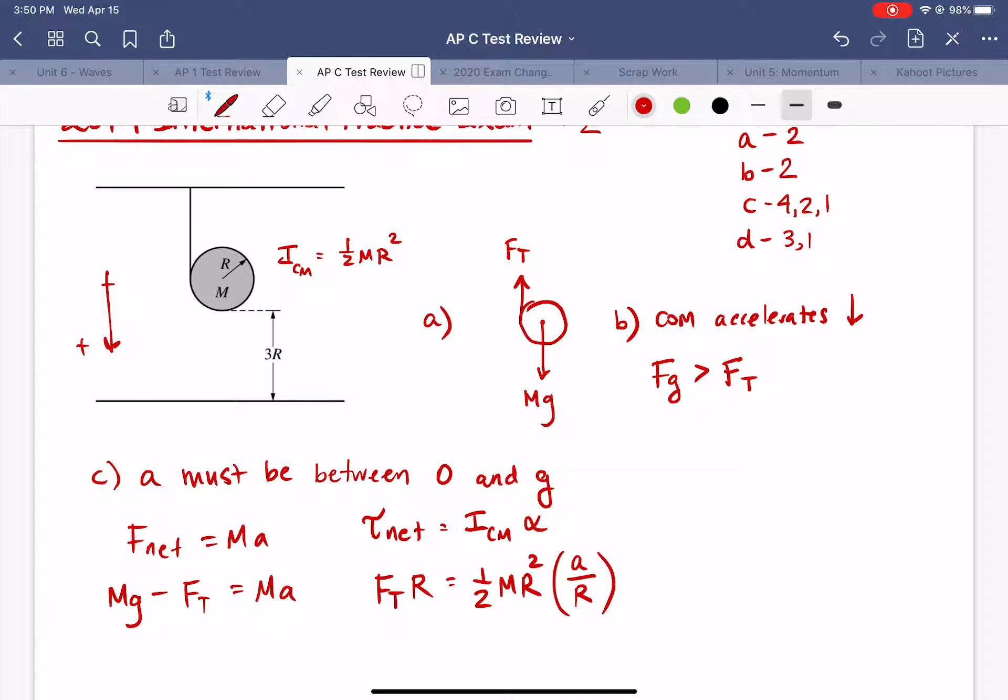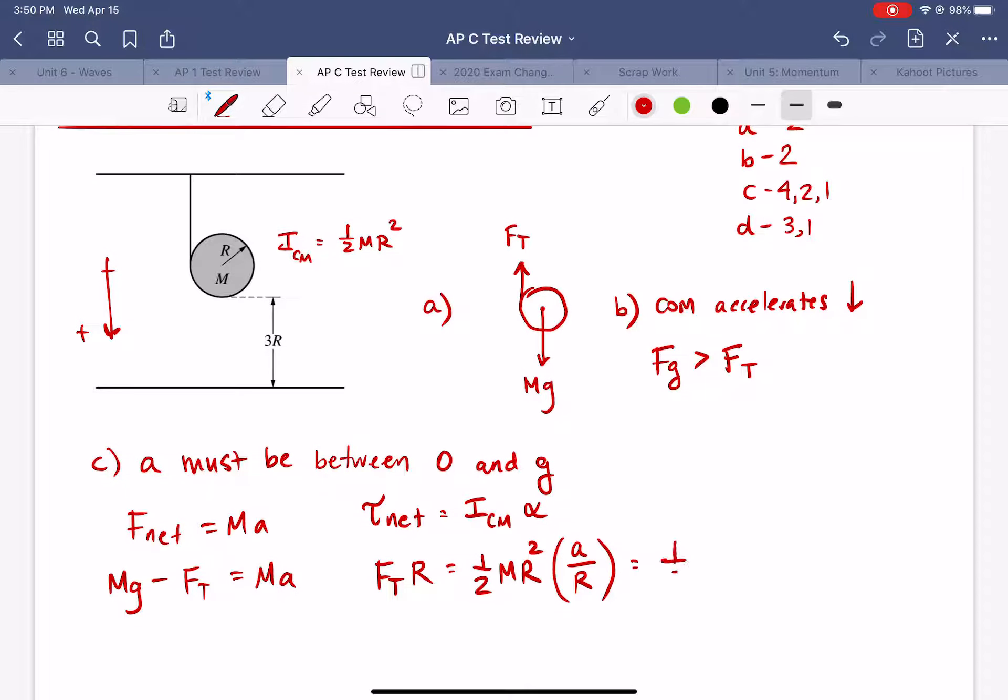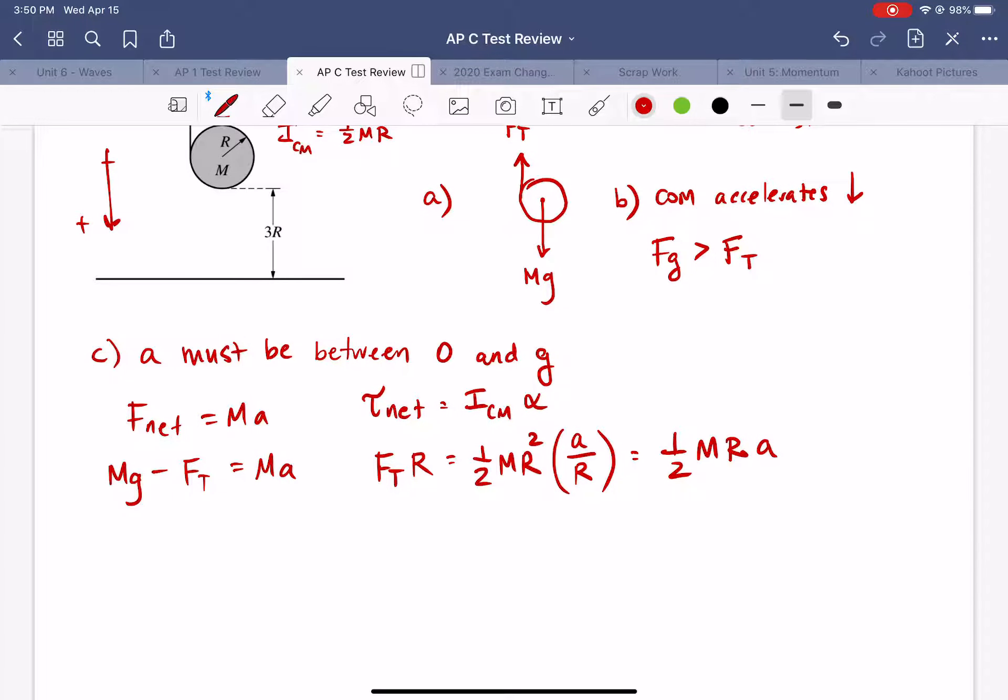So it turns out the rolling without slipping condition applies here as well as long as the string remains taut around the object as it falls. So this simplifies to 1/2 M R A. I can divide both sides of this equation now by R and get that the tension force equals 1/2 mass times acceleration.